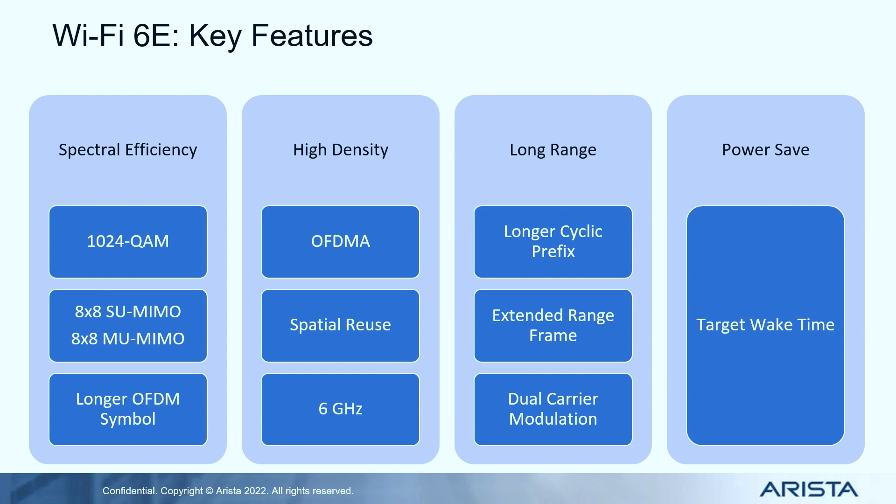I have divided them into four parts. There are features which target spectral efficiency such as 1024 QAM, which gives you more bits per symbol. Then there is MIMO, 8x8 in both uplink and downlink. You have a longer OFDM symbol, again giving you more bits per second. Then you have features targeted towards high density like OFDMA. You have spatial reuse, which we will see in more detail, and 6 GHz of course, which gives you more spectrum, more channels, and more capacity.